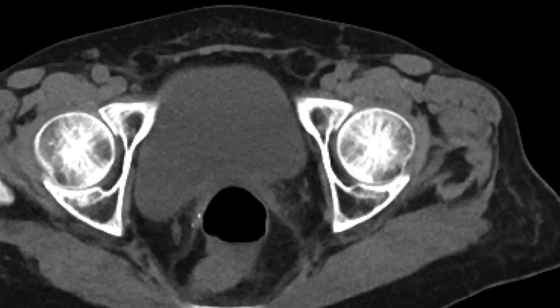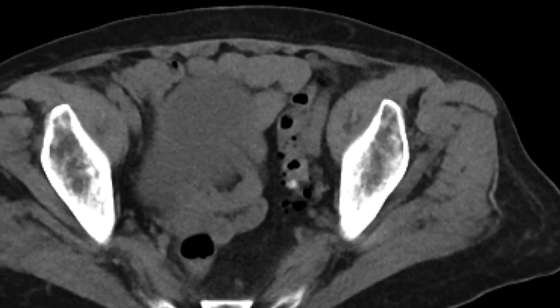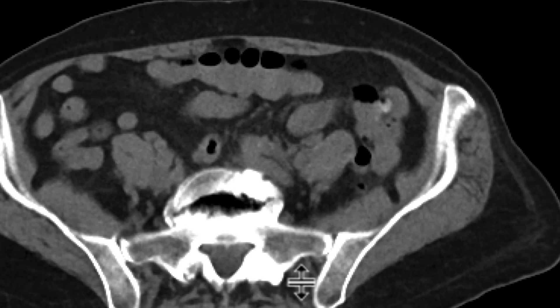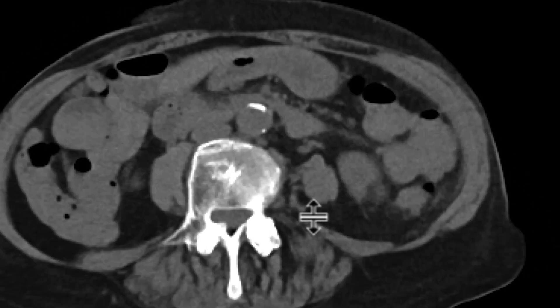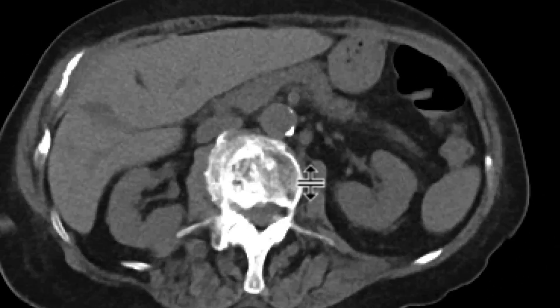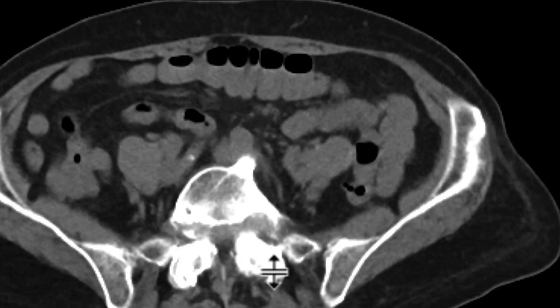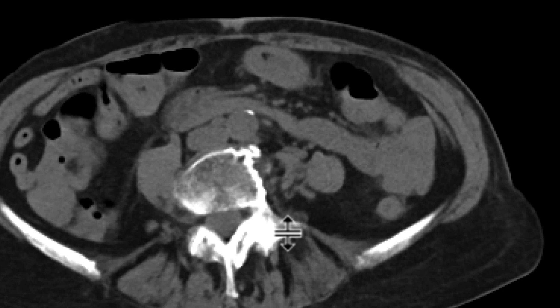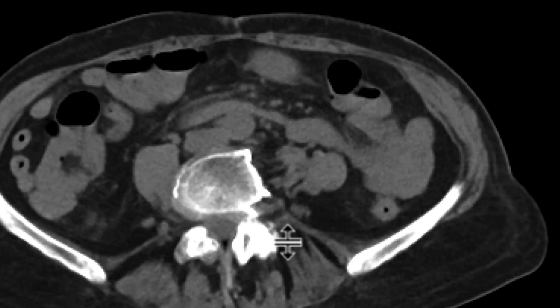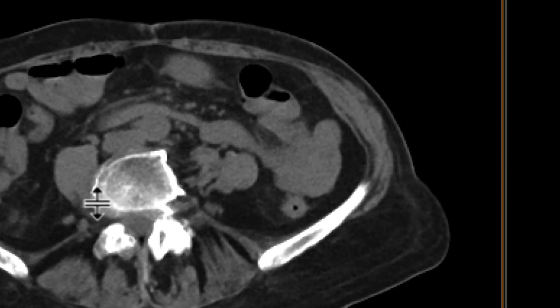There are a few diverticulae which have some high density, probably from some prior barium, but overall it looks pretty good. I want you to focus on the ileocecal valve — we can see a fatty portion of it right over there.